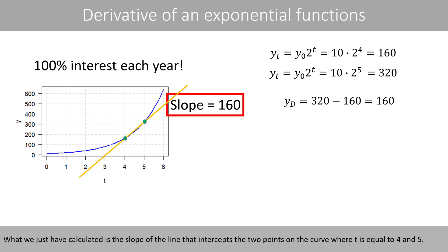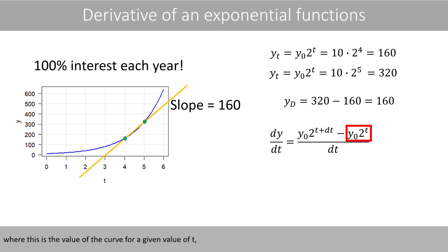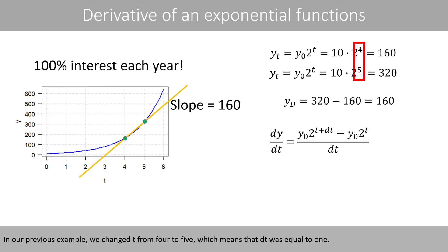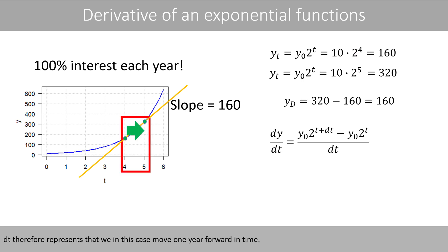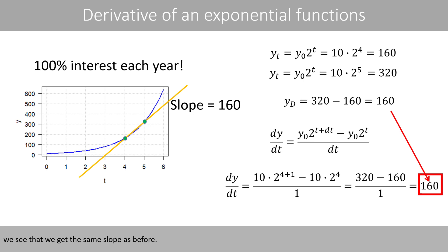What we have just calculated is the slope of the line that intercepts the two points on the curve where T is equal to 4 and 5. The slope, or the derivative, between two points on this curve can be calculated by the following formula. In our previous example, we changed T from 4 to 5, which means that DT was equal to 1. DT therefore represents that we in this case move one year forward in time. If we set T to 4, DT to 1, and Y0 to 10, and do the math, we see that we get the same slope as before.